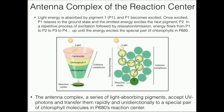The light energy is transferred from pigments on the outside of the reaction center and it's transferred unidirectionally along a specific path to the reaction center, where this dark green dot is representative of P680, the reaction center of photosystem II. When light strikes these pigments out here, it's not actually electron transfers — it's energy transfers.